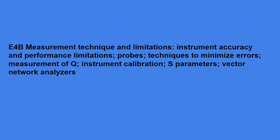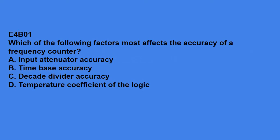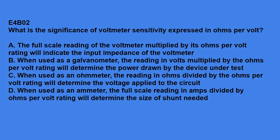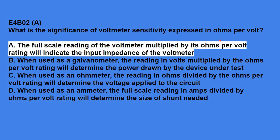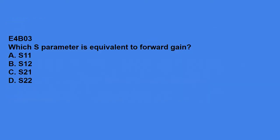E4B is measurement techniques and limitations, instrument accuracy and performance limitations, probes, techniques to minimize errors, measurements of Q, instrument calibration, S parameters, vector network analyzers. E4B01 says, which of the following factors most affects the accuracy of a frequency counter? That answer is time-based accuracy. E4B02, what is the significance of voltmeter sensitivity expressed in ohms per volt? The answer is the full-scale reading of the voltmeter multiplied by its ohms per volt rating indicate the input impedance of the voltmeter. E4B03, which S parameter is equivalent to forward gain? And that is S21.